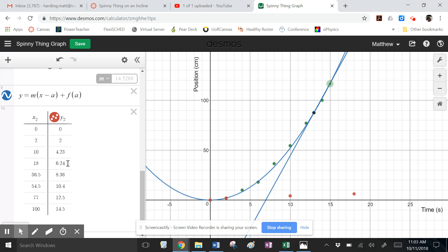When I double the displacement, which is basically what happens here, 36.5, so I'm twice as far down the ramp, is my velocity twice as much? No, it's not. It's only 8.36. If you look at this, when I was 10 centimeters down the ramp, my velocity was 4.23. 36.5, that's just a smidge under 40. So that's like four times as far down the ramp.